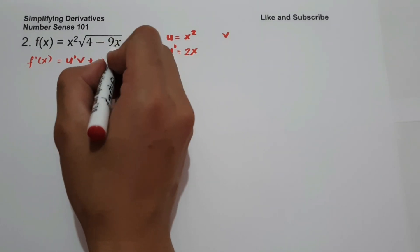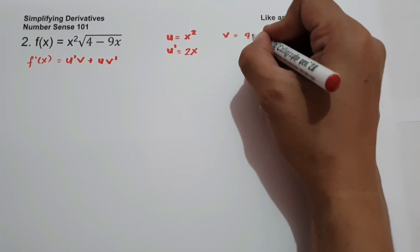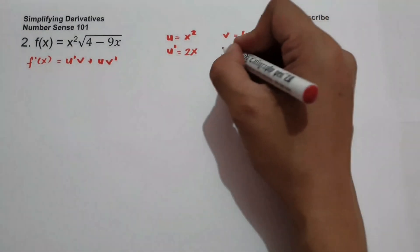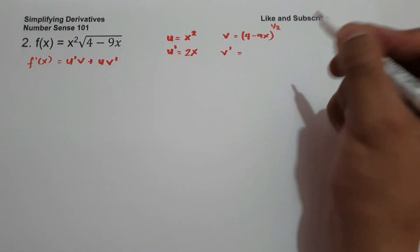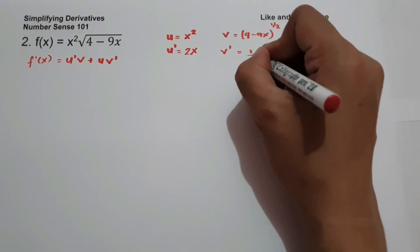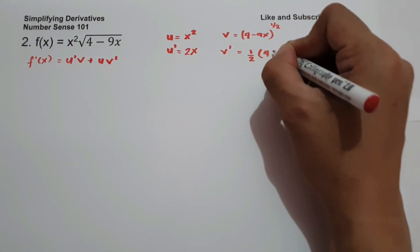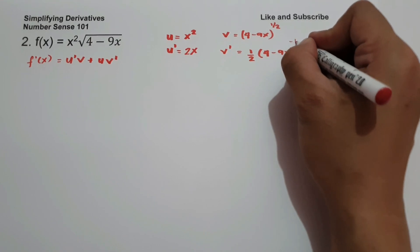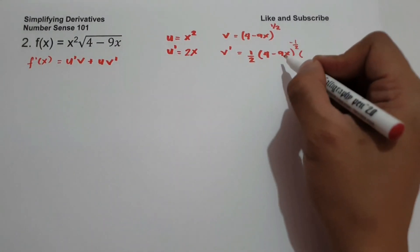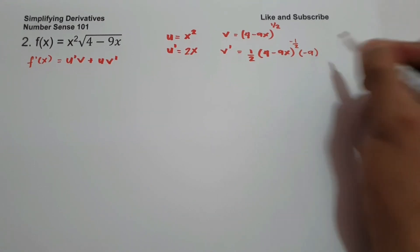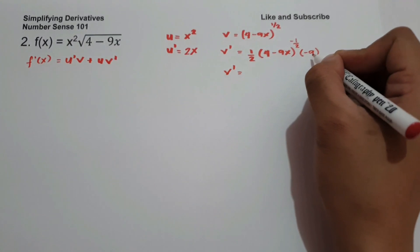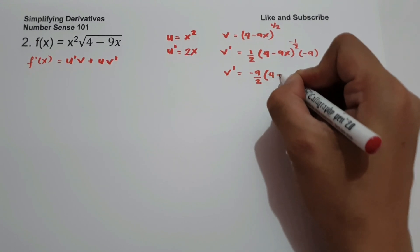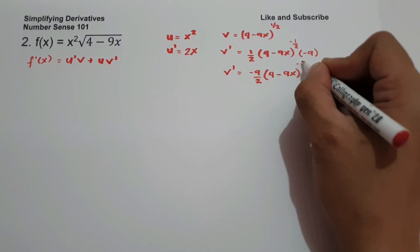And then v is 4 minus 9x, but let us write this as 4 minus 9x raised to 1/2. So v' — this is a chain rule — gives 1/2 times 4 minus 9x raised to 1/2 minus 1, that is negative 1/2, times the derivative of 4 minus 9x, which is negative 9. So v' is negative 9 over 2 times 4 minus 9x raised to negative 1/2.